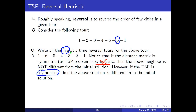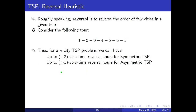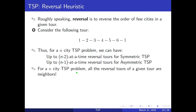Otherwise you will have a maximum of four-at-a-time reversals. So to summarize: for an n-city problem you will have a maximum of n-minus-two at-a-time reversals for symmetric TSP, and you will have n-minus-one at-a-time reversals for asymmetric TSP. Now, given a tour, all the reversals are nothing but the neighbors of the current tour, and the idea of the reversal heuristic is to execute a greedy search.